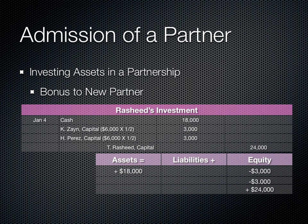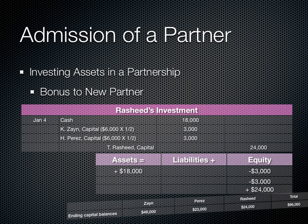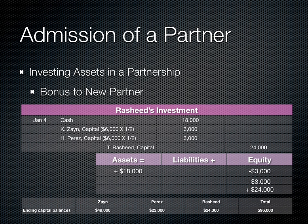Finally, let's assume that Zane and Perez need to convince Rashid to join by offering him an additional stake. They still want Rashid as a 25% partner, but only require that he invests $18,000. Rashid's equity is calculated as: existing equity of $78,000 plus $18,000 equals total partnership equity of $96,000. 25% of $96,000 is $24,000. On the statement of partners' equity, Rashid is added, and Zane and Perez's equity each decreases by $3,000, with Rashid's equity at $24,000 for a total of $96,000.